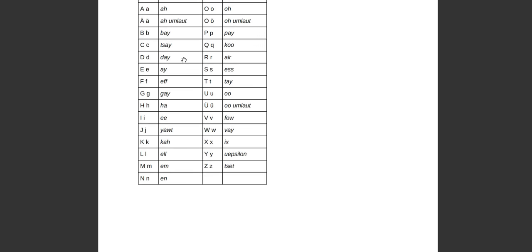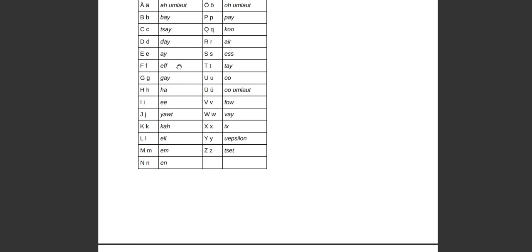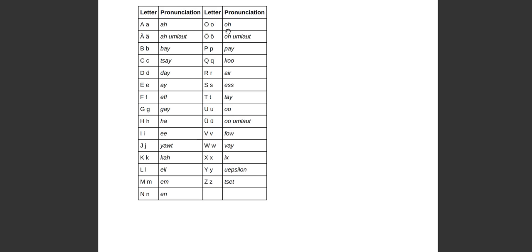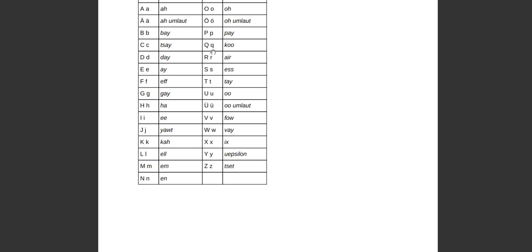The German alphabet continues: B, C, D, E, F, G, H, I, J, K, L, M, N, O — and then Ö-umlaut, with two dots on the O. Then P, Q, R, S, T, U — and U-umlaut. There are three umlauts in German: Ä, Ö, and U. That is a vowel — not a V, it's a vowel — and that is also a vowel, not a W. Then X, Epsilon, Z.